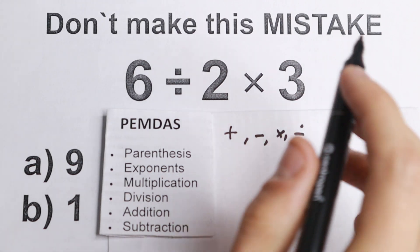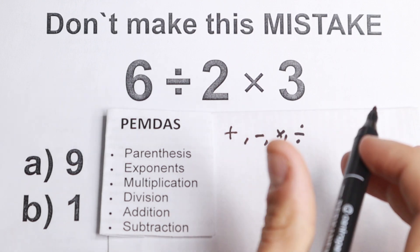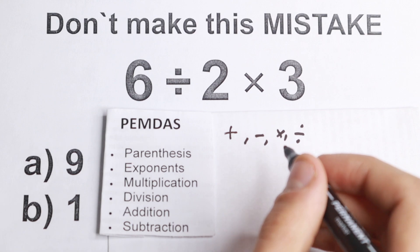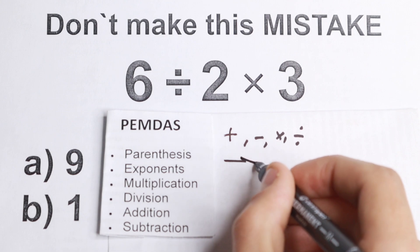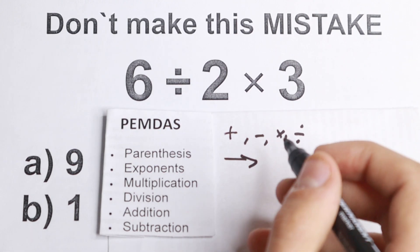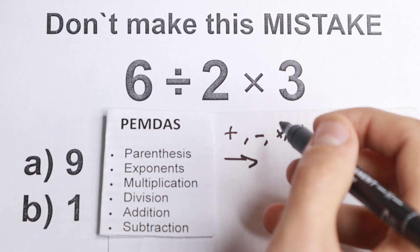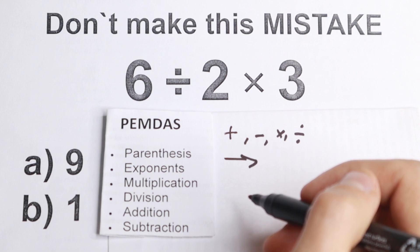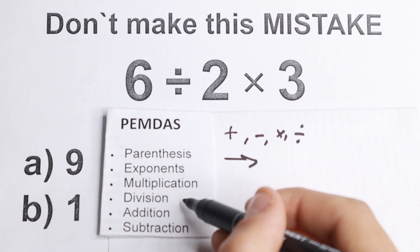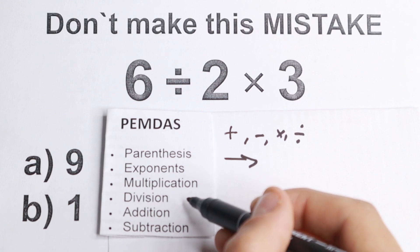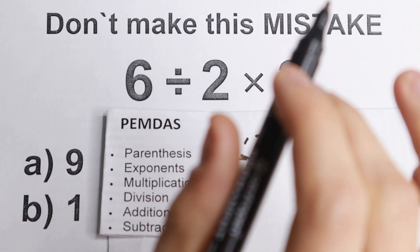A lot of students make this error — and it's really not their fault, there's genuine confusion about it. Most people think you're going to do this in a strict left-to-right order based on the acronym. In other words, you're always going to do multiplication before division, and addition before subtraction. That makes sense intuitively, however that's not actually the way this works.